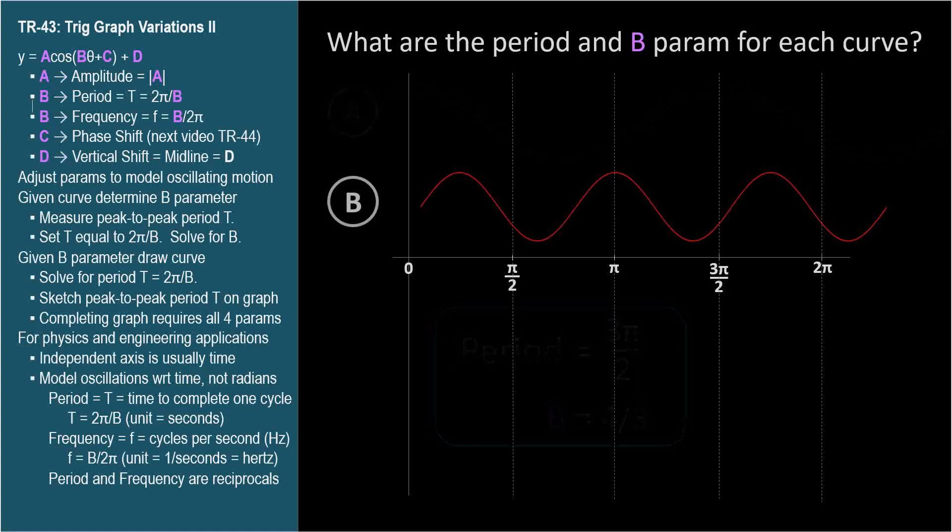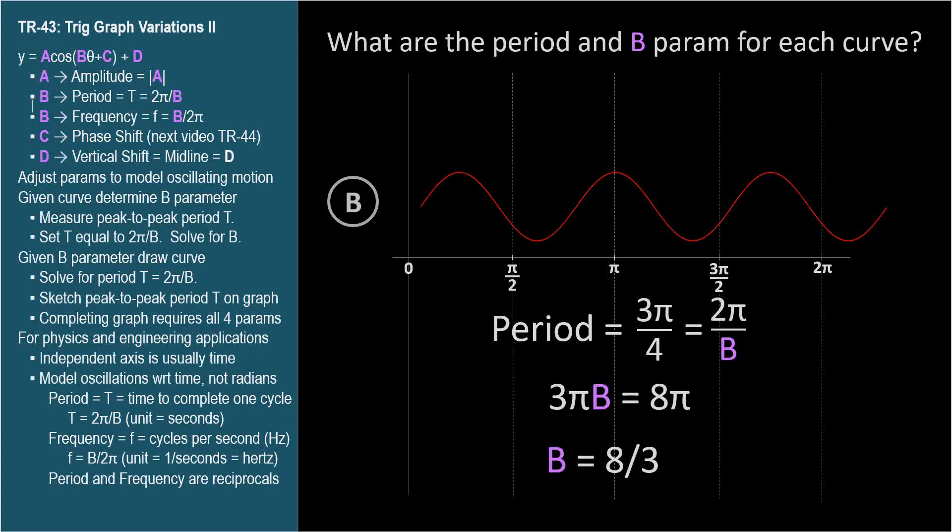For curve b, it looks like the peak to peak distance is pi minus pi over 4. So the period is 3 pi over 4. The period is also 2 pi over b. So solving for b yields 8 thirds. So when the period is 3 pi over 4, the b parameter is 8 thirds.